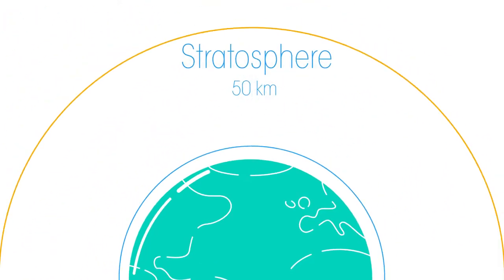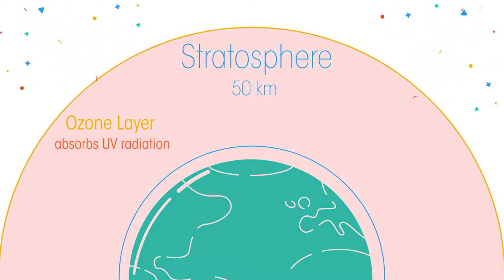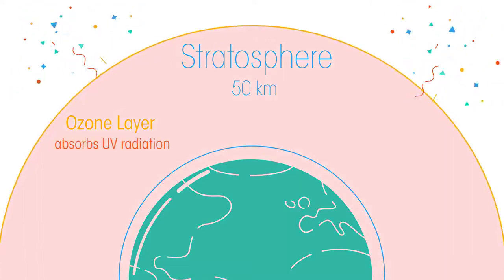Then the stratosphere, up to 50km, which contains the very important ozone layer. The ozone layer both heats the stratosphere and also absorbs and scatters harmful ultraviolet radiation from the sun, protecting all life on Earth.